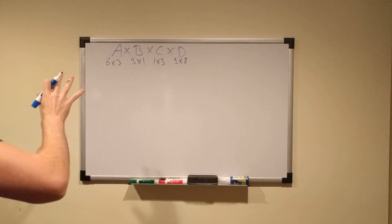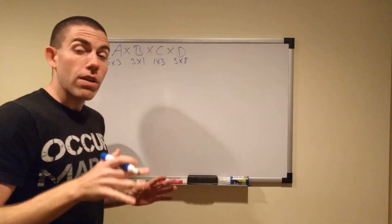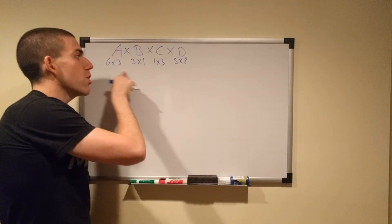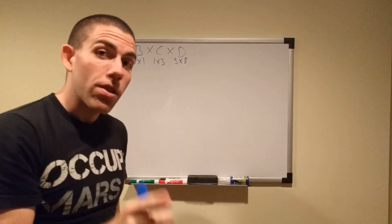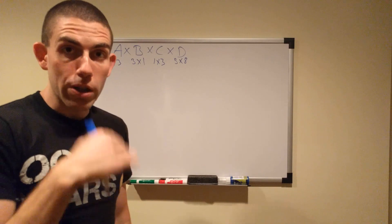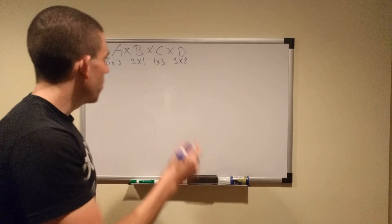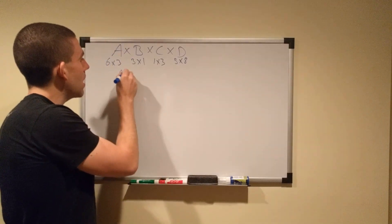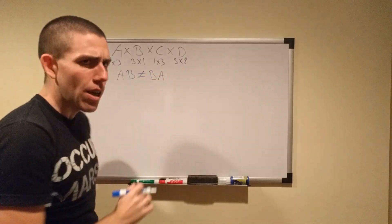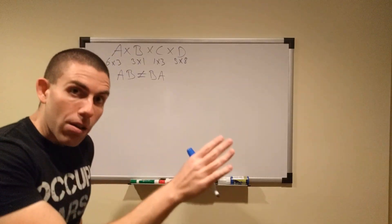Before we go any further with this, just in case anybody's forgotten some stuff from linear algebra, we're going to just quickly go over that. First off, matrix multiplication, while associative, does not share commutativity with real number multiplication. With real numbers, 4 times 6 is the same thing as 6 times 4. But with matrices, A times B is not the same as B times A. You will not get the same product matrix, and often it won't even work. So that's that out of the way.